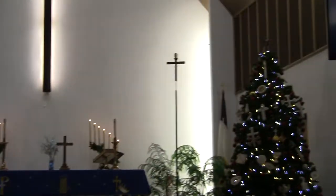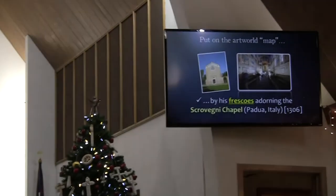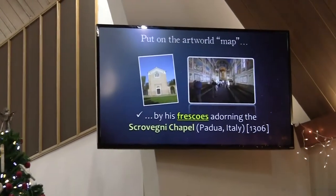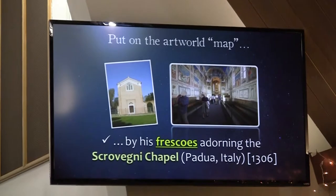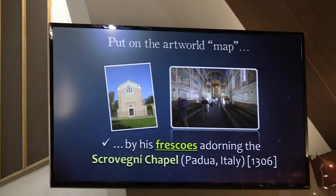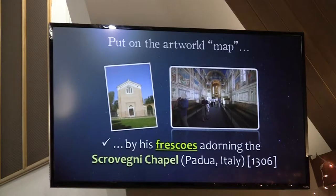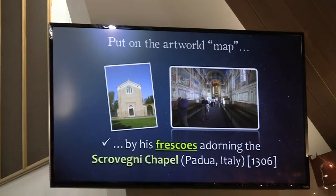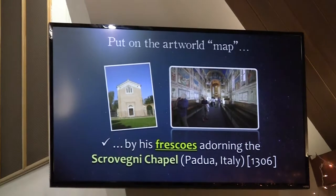He became really famous for these frescoes — frescoes being this process by which you take paint and apply it to wet plaster as it's curing in a building, so these paintings literally become fused to the buildings and walls. And this Scrovegni Chapel in Padua, Italy in 1306 — he spends two years painting all of the depictions of Christ's life and the apostles in this chapel. There are about 70 different images that he paints in this little chapel.